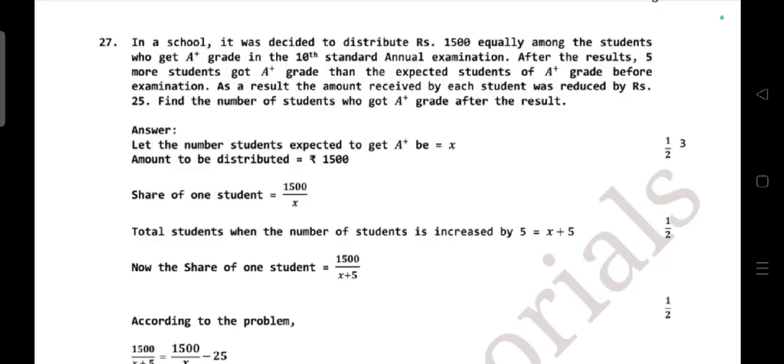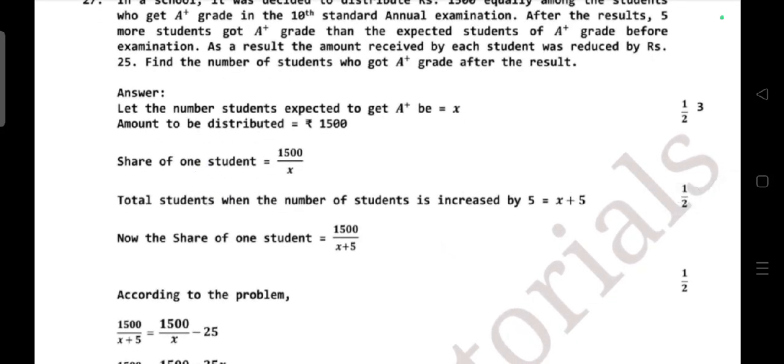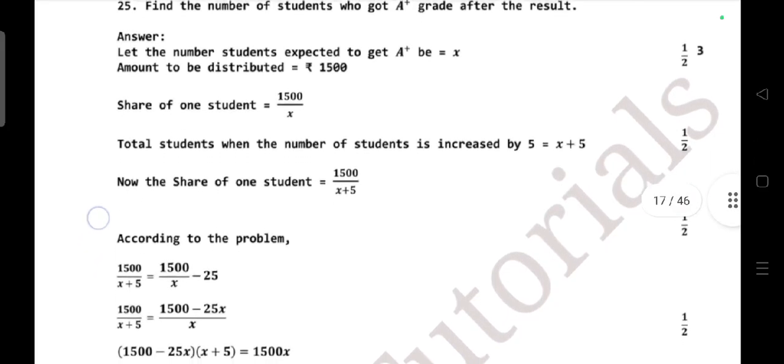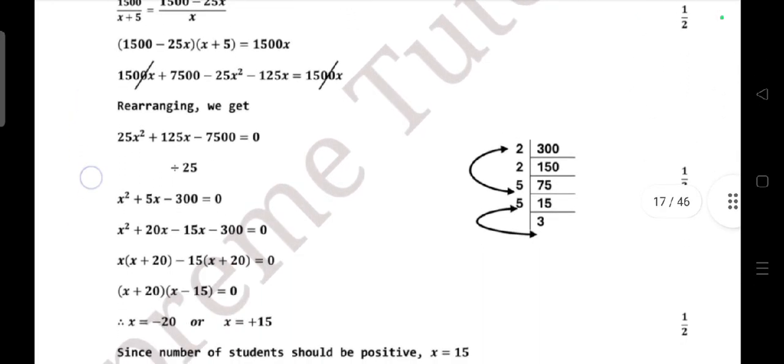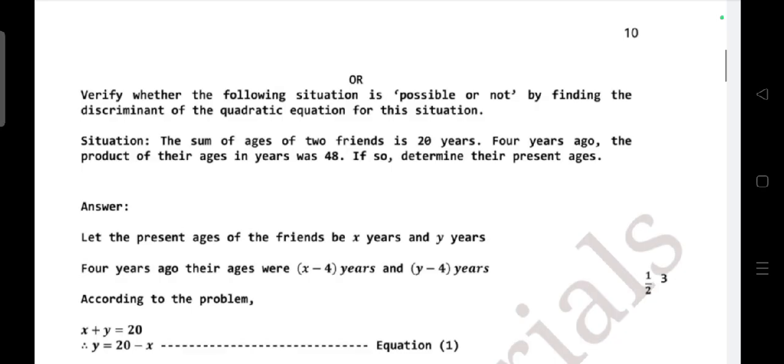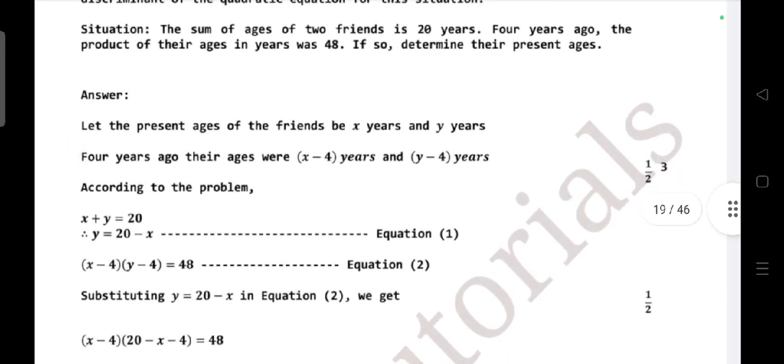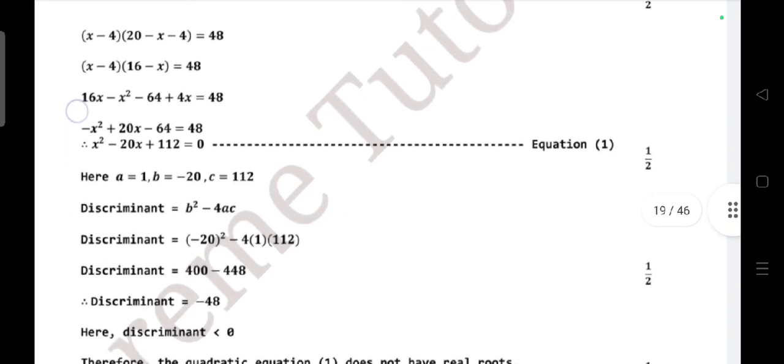Question number 27: in a school, it was decided to distribute rupees 1500 equally among the students who get A+ grade in 10th standard annual examination. After the results, five students got A+ grade more than expected A+ grade before examination. As a result, amount received by each student was reduced by 25 rupees. Find the number of students who got A+ grade in 10th standard. I'm not explaining answers here because video will become more longer.